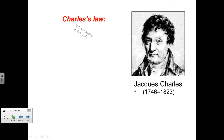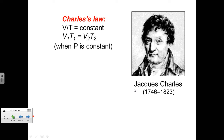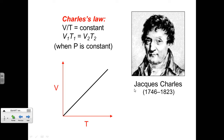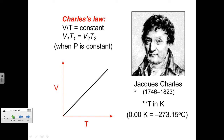With Charles' Law, the relationship is centered on volume and temperature, where pressure is held constant. Volume is measured in liters and temperature in Kelvin. There is a direct relationship: as volume increases, so does temperature. An important caveat is that temperature must always be measured in Kelvin.